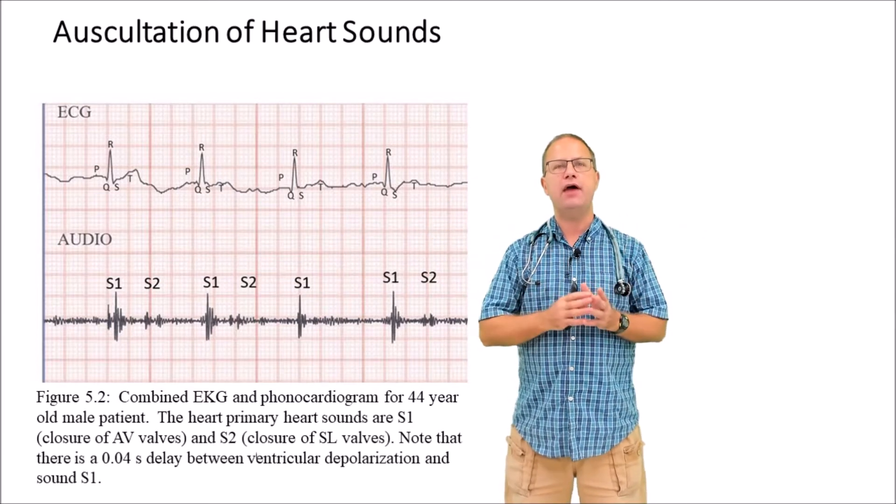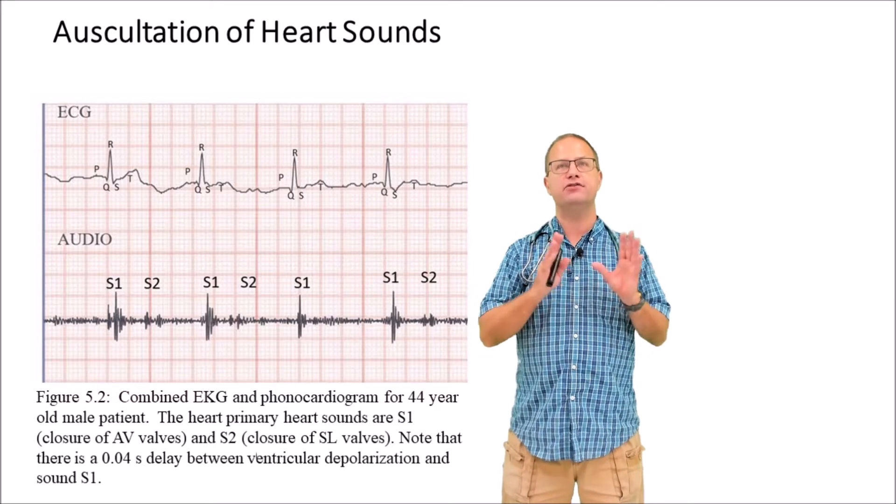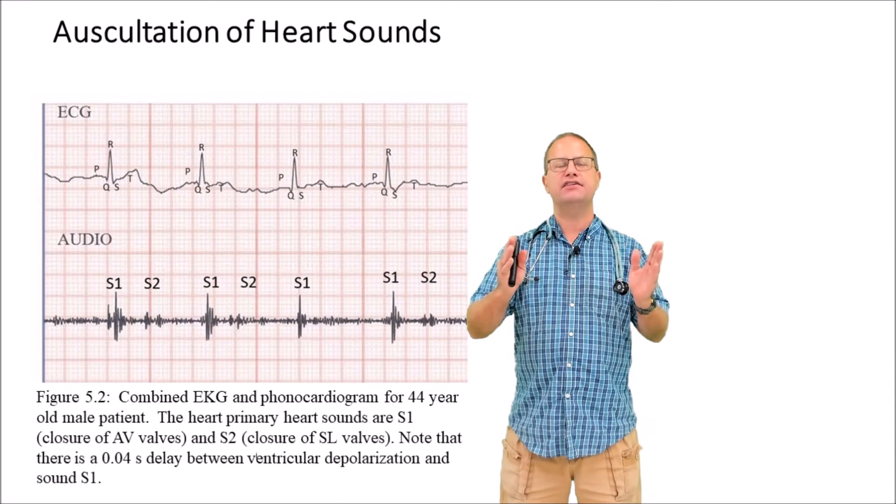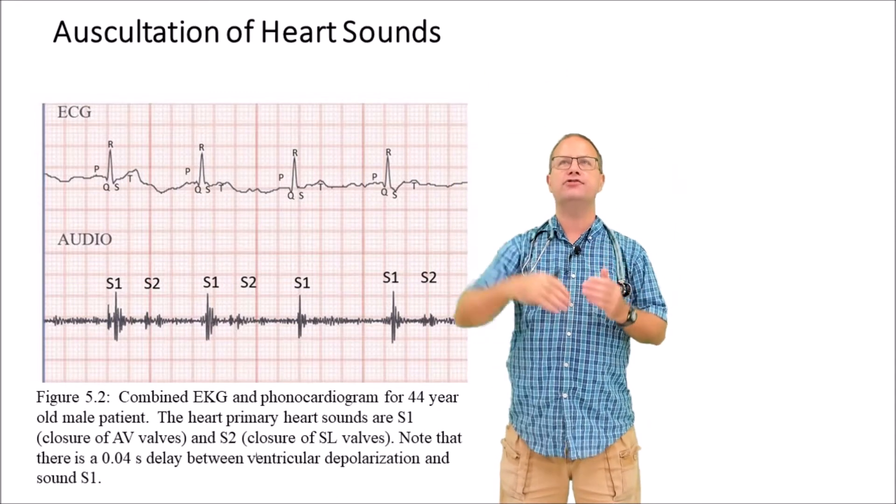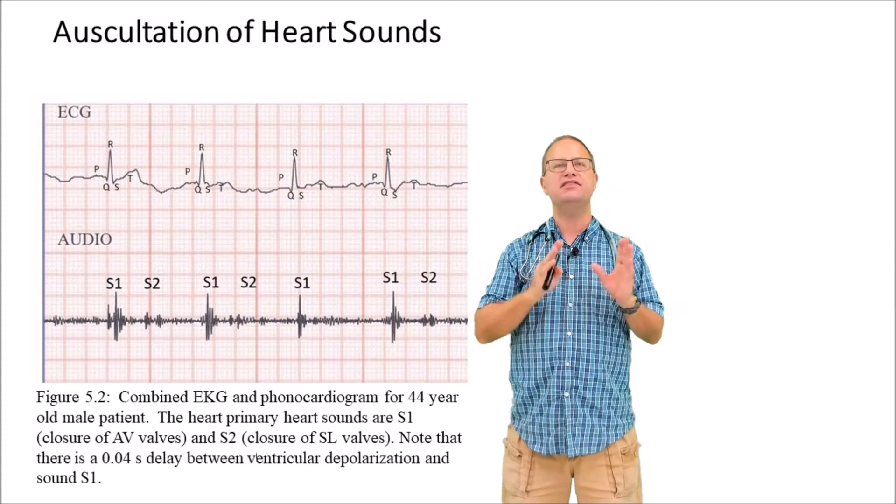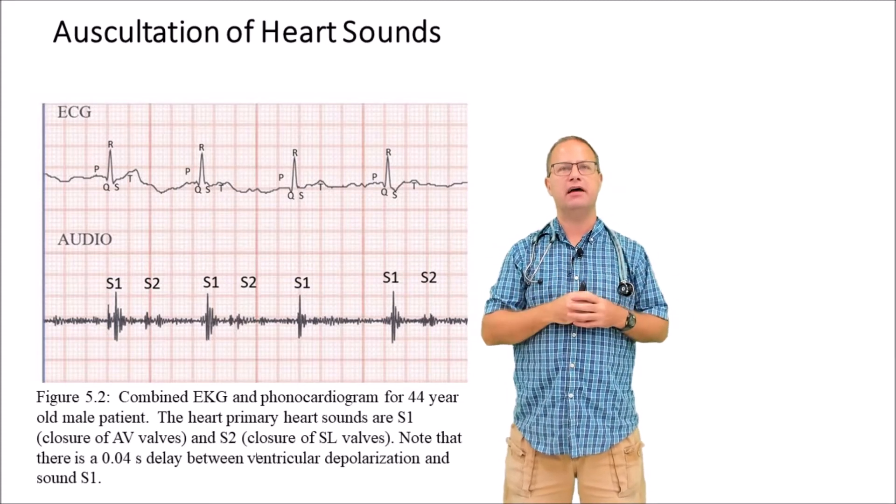Sound S2 happens as the ventricles begin to relax during ventricular diastole. As the ventricles relax and begin to expand, the blood in the pulmonary trunk and aorta wants to go backwards but the semilunar valves snap shut. This is S2, closure of the semilunar valves.